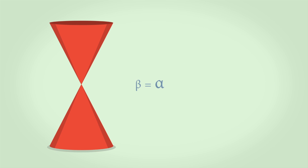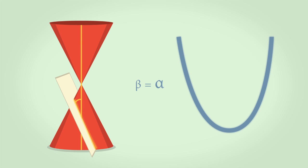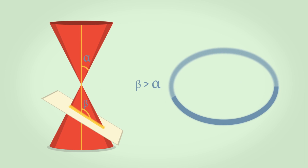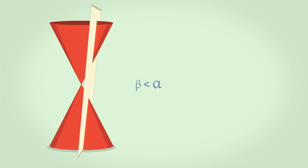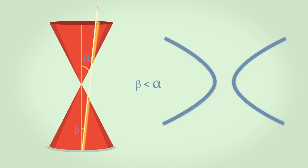Si beta es igual a alfa, es decir, el plano es paralelo a una generatriz y corta a todas las demás, se obtiene una parábola. En el caso que beta sea mayor que alfa, la curva es una elipse, y si beta es menor que alfa, cortará las dos ramas del cono, formando así la hipérbola.